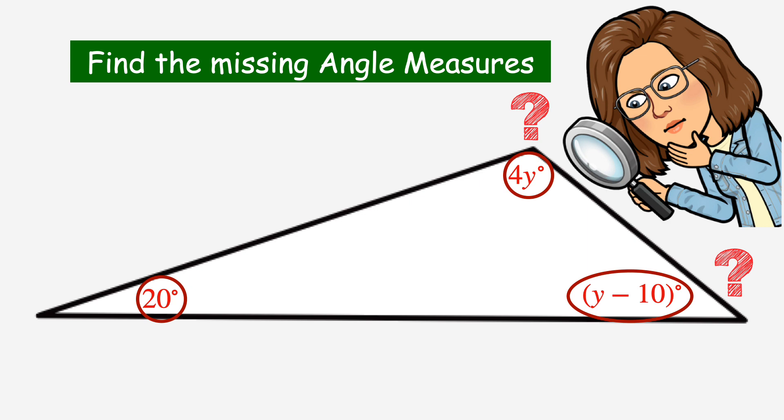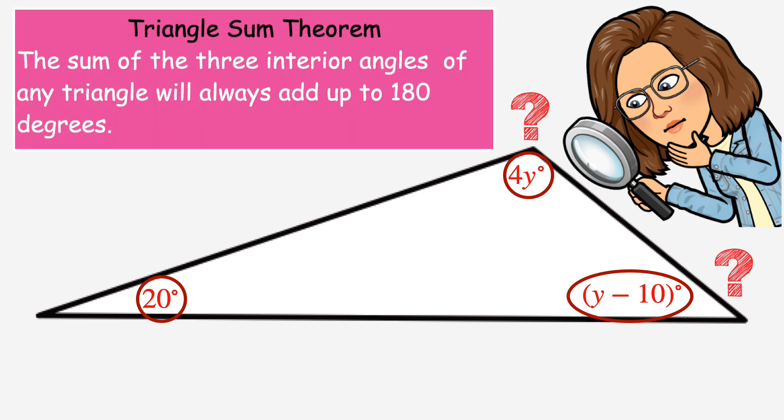We can use simple equations and the Triangle Sum Theorem to find these two missing angle measures. The Triangle Sum Theorem states that the three angles inside of any triangle will always add up to 180 degrees. So, this gives us the equation that we will use to find those two missing angles.